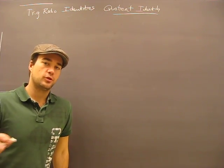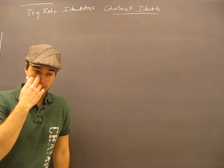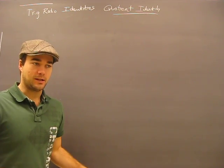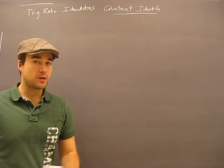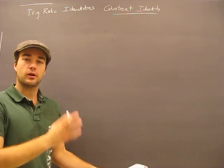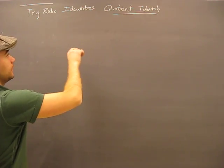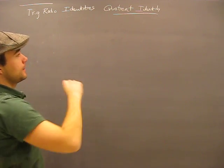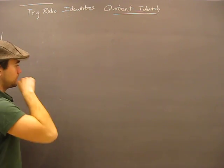We have a rule identity that we could either just memorize or we can understand, so let's work on understanding that quotient identity. This is some basic stuff.